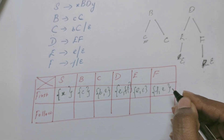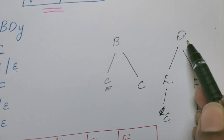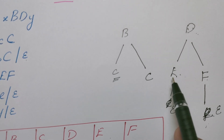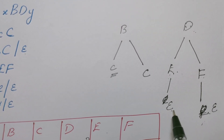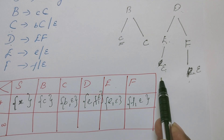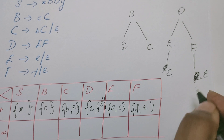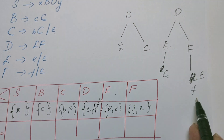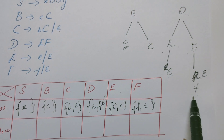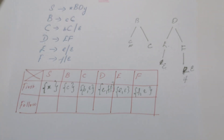Let me explain the FIRST set for D once more. D expands to E and F. For E there are two options: terminal E, or epsilon. If replaced by terminal E, then E is in FIRST of D. If replaced by epsilon, we look at F next. For F there are also two alternatives: small f, or epsilon. If F is replaced by f, then FIRST of D includes f. If F is also replaced by epsilon, then FIRST of D contains epsilon. So FIRST of D = {E, F, epsilon}.